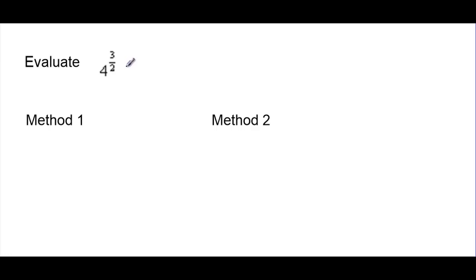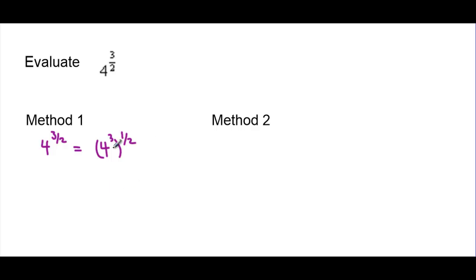Now we have something more interesting: a base of 4 to an exponent of 3/2, which isn't a simple 1/2 exponent. Here's the first way to evaluate it. Write 4 to the exponent 3/2 as a power to a power: 4 to the exponent 3, then that entire power to the exponent 1/2. The exponent 1/2 means take the square root. 4 to the exponent 3 is 4 times 4 times 4, which is 64. Then 64 to the exponent 1/2 — the square root of 64 — is 8. So 4 to the exponent 3/2 equals 8.